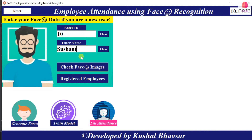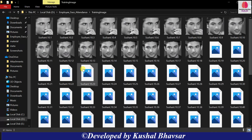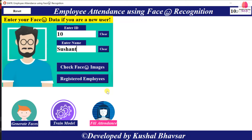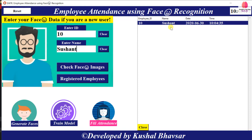So it takes 81 face images for the user — almost 81 images for Sushant Singh Rajput. Now let's click 'Register Employee' and check face images. When I click this button it redirects to where the training images are stored. Clicking 'Register Employees' shows how many persons are registered — you can see Sushant's name here because at ID 104 I registered his face.